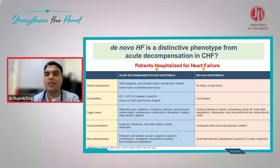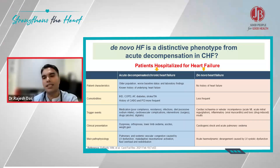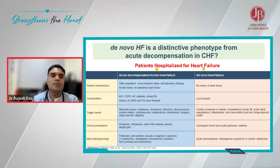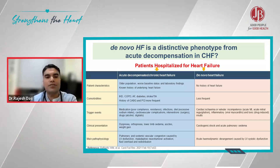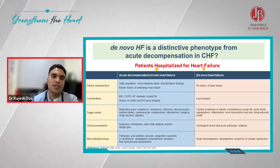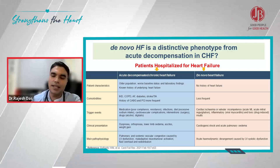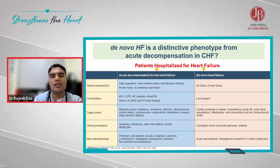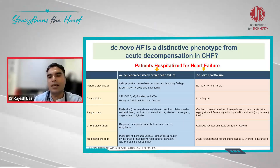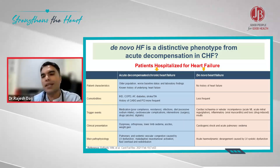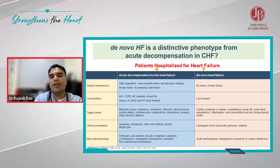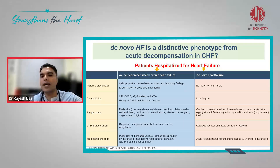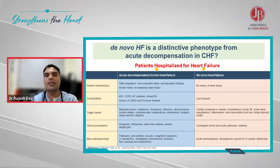De novo heart failure patients more often present with cardiogenic shock and acute pulmonary edema. The main pathophysiology in ADHF is increased pulmonary and systemic vascular congestion, whereas in de novo heart failure there is acute hemodynamic derangement caused by LV systolic dysfunction.